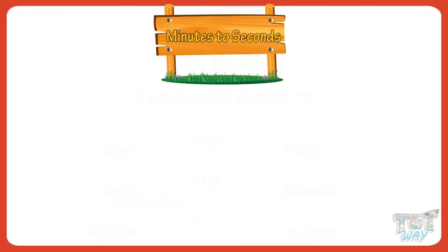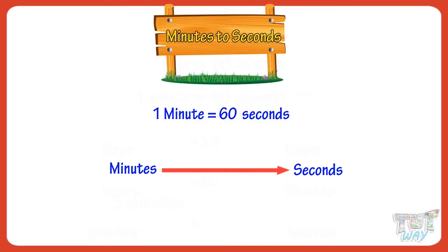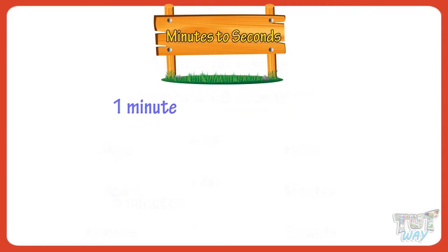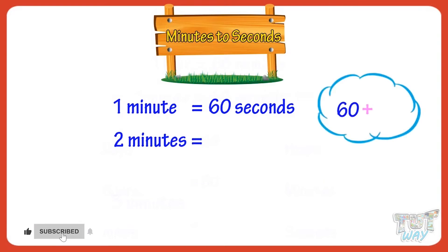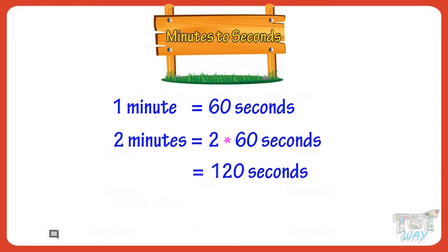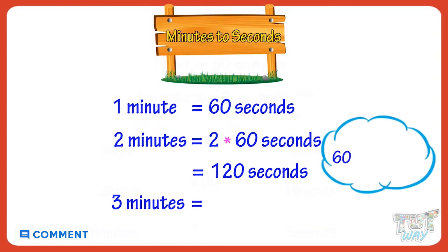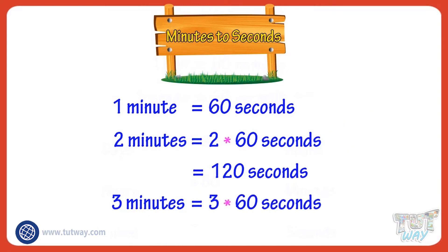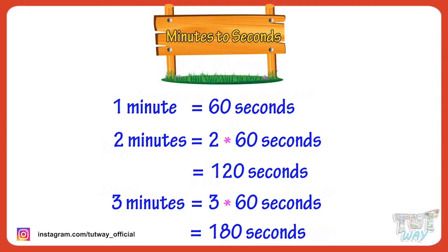Now let's learn converting minutes to seconds. There are 60 seconds in a minute. So to convert minutes to seconds, we need to multiply minutes with 60. One minute equals 60 seconds. Two minutes equals 60 multiplied by 2, equals 120 seconds. Three minutes equals 60 multiplied by 3, equals 180 seconds.